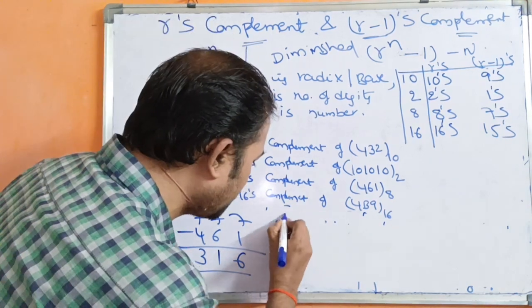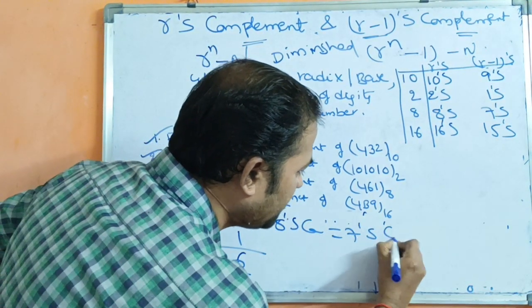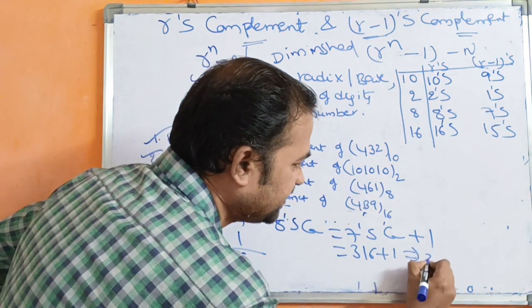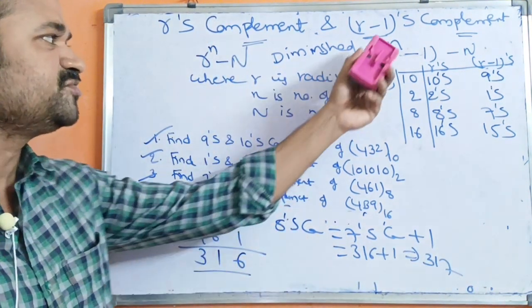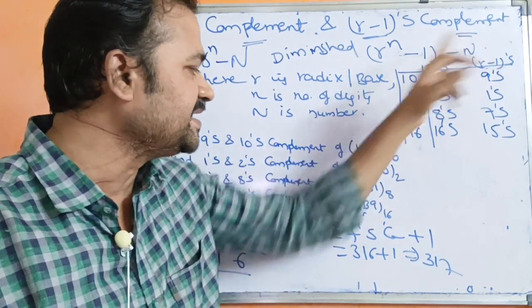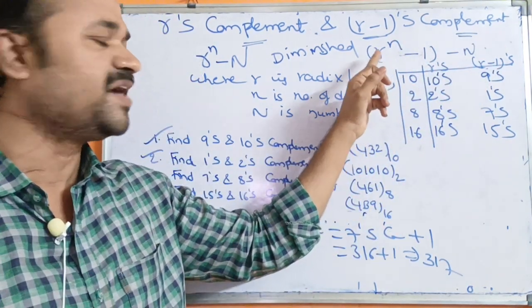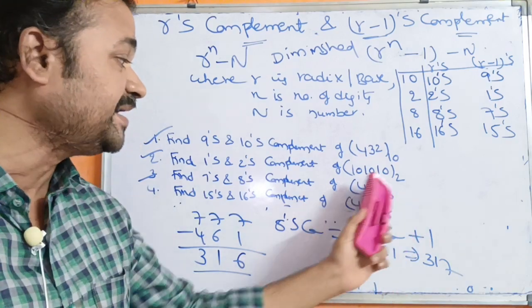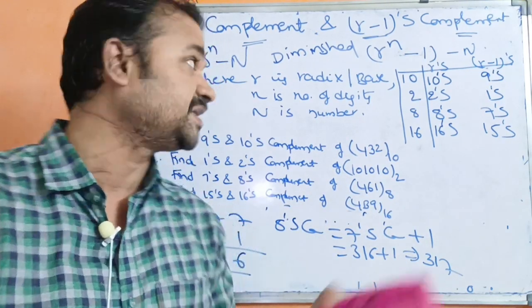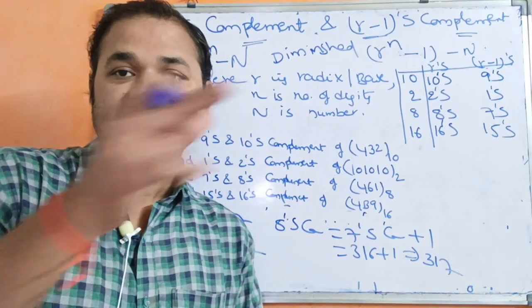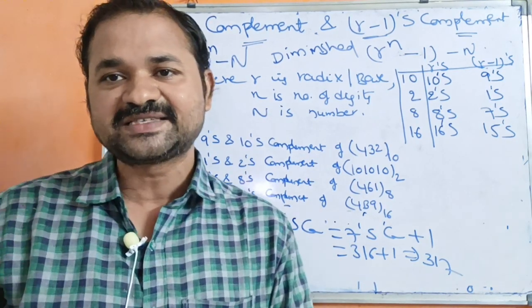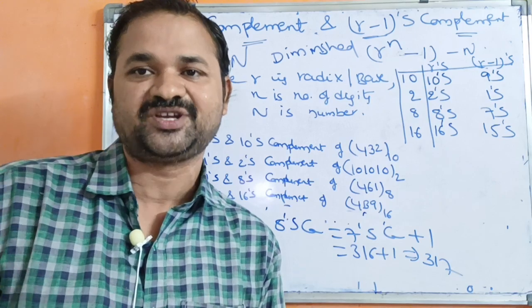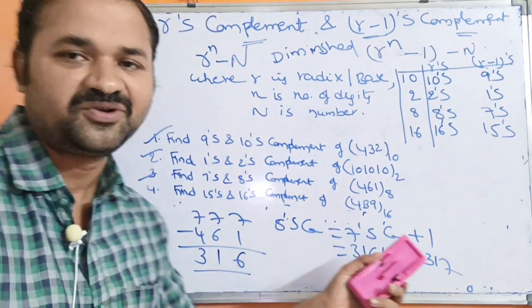For 8's complement, the formula is 7's complement plus 1. 7's complement is 316, so 316 plus 1 is 317. Using the formula directly would require converting octal to decimal and back, which is a lengthy process — so the direct method is preferable.